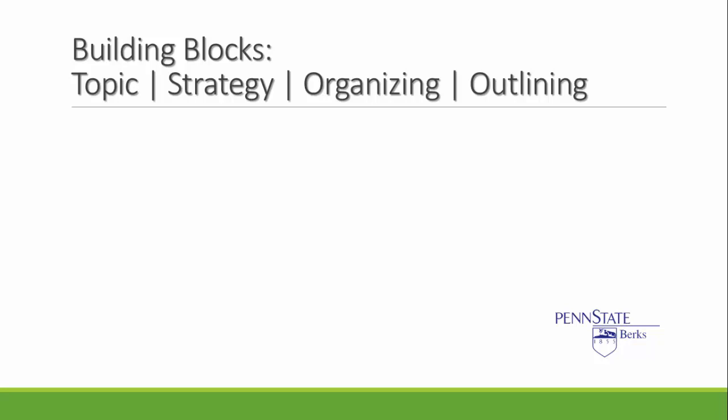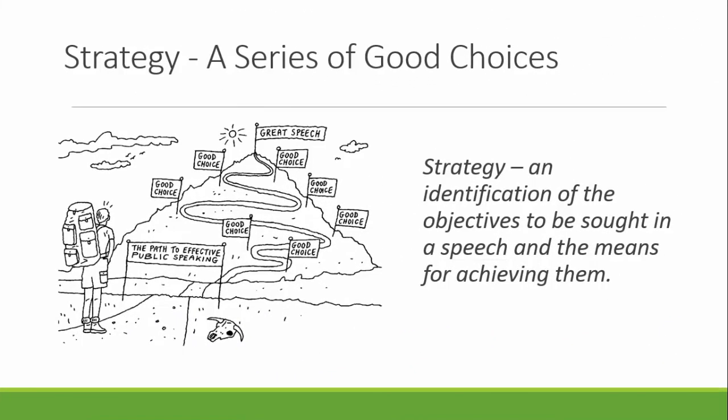The first segment in this module is Topic. But before we begin Topic, we need to understand how our path to effective public speaking begins with the concept of Strategy. Strategy, as seen in this picture, is essentially a series of good choices. Formally defined, strategy is an identification of the objectives to be sought in a speech and the means for achieving them. If you begin making good choices for all of your speech objectives and continue to do so throughout the speech process, you will deliver a solid, supported, well-delivered speech. Because of the importance of this concept of Strategy, we will see this visual picture represented numerous times throughout the semester.